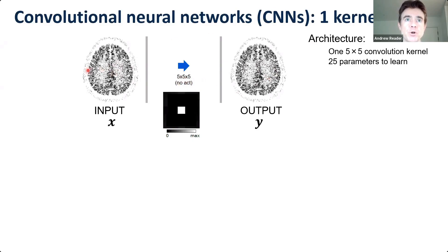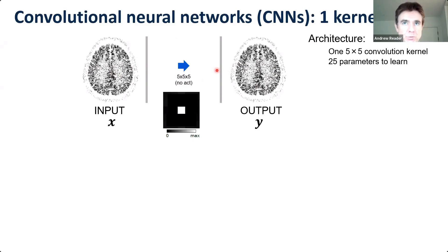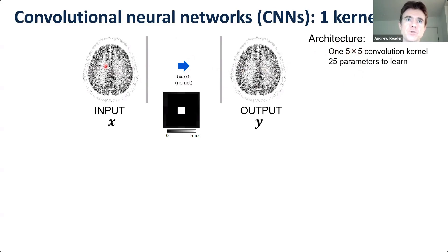So in convolutional neural networks, we can do a convolution with a kernel, and then we can also do an offset or a bias, and then a nonlinear activation, such as a ReLU function, which sets negatives to zero. And that's where we get the nonlinearities in our mappings, which is what can make them quite powerful. Just motivating things here with a simple example of an architecture consisting of just one 5x5 2D convolution kernel. In which case, we'll just be seeking to learn a 5x5 kernel, which is 25 parameters, which will map a noisy input to a high quality reference.